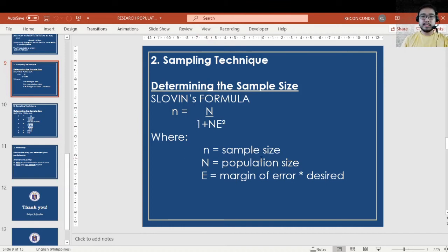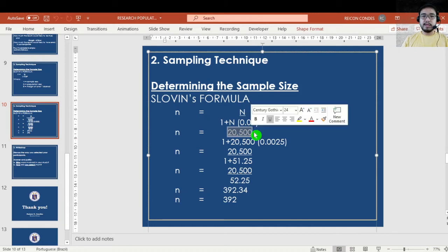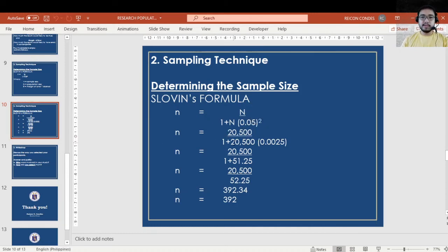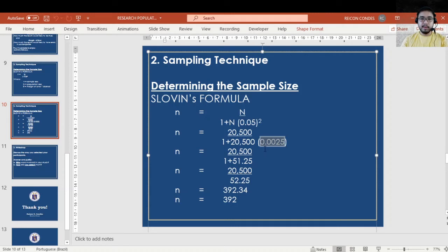In terms of computing how many samples should you get based on the total number of population, commonly used is Sloven's formula with n over 1 plus N e-squared. We have sample size, population size, and the margin of error. For example, you have a population size of 20,500. Following the formula, you have 0.05 as the margin for error, and then squared, 0.0025 times 20,500.